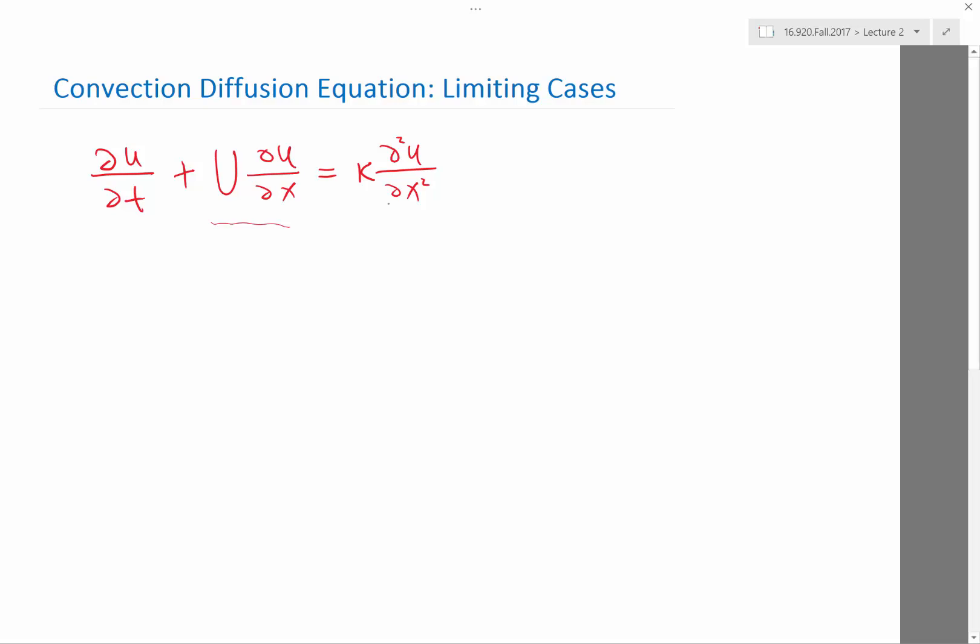Remember in the last lecture, a large kappa makes the solution become a flat line really quickly. A small kappa takes a long time for the solution to die out. And then we have an algebraic term - F can depend on U but not on the derivatives of U, or it can just be a constant. That's what we call a source term.